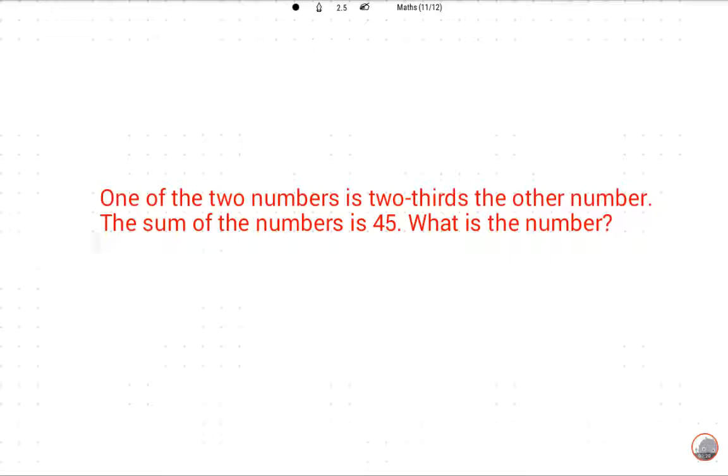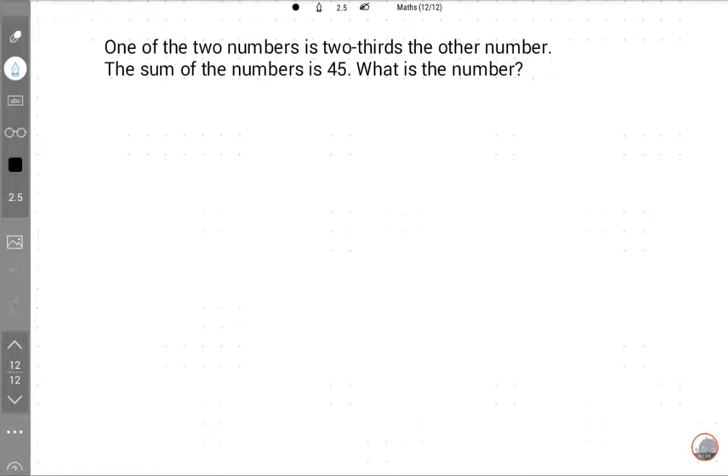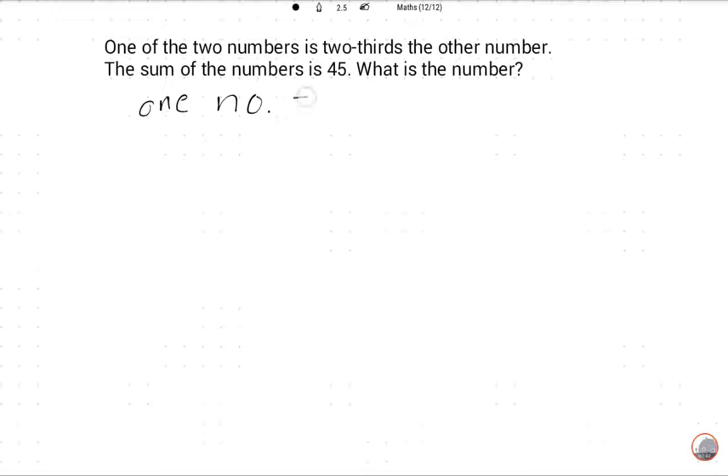This line is showing the corresponding equation and this is the data. Now let's solve. One of the two numbers - one number, if it is X, the second number is two-thirds the other number.